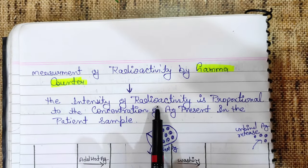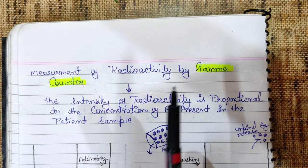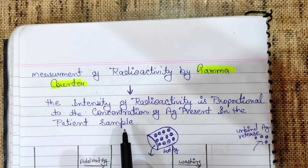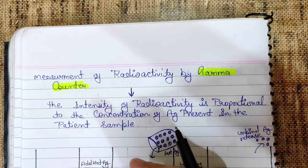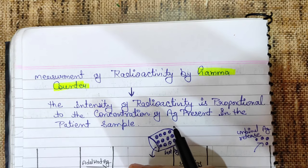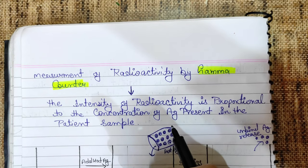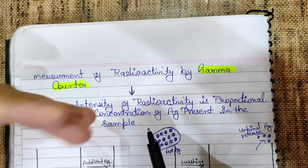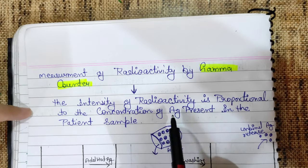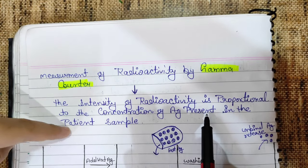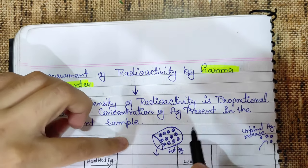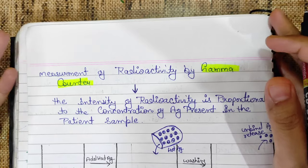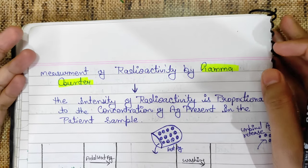The intensity of radioactivity is directly proportional to the concentration of antigen present in the patient sample. This tells us how much cold antigen is present in the patient sample. So this is all about radio immunoassay. Thank you so much for watching.